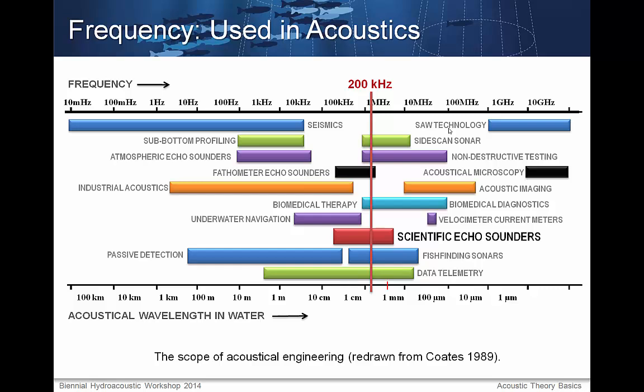Things that require deeper penetration, such as seismic and sub-bottom profiling, use lower frequencies, while applications requiring high resolution, such as acoustical imaging and acoustical microscopy, use higher frequencies. When the speed of sound is constant, there is a one-to-one relationship between wavelength and frequency. In terms of scientific echo sounding, a range around 200 kHz is common for use.